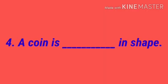Then number 4: A coin is dash in shape. I know everyone has seen the coin - 1 rupee coin, 2 rupee coin, 5 rupee coin. You have observed them, so you can write this answer very easily.